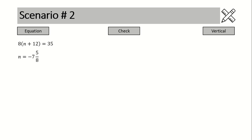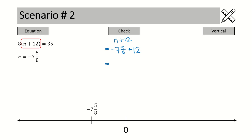Now let's look at scenario number two. Inside our brackets we have n plus 12, but when we substitute our solution it's a negative mixed number — in this case, negative seven and five-eighths — and we are going to add 12. On the number line, we start at negative seven and five-eighths and add 12, crossing over zero into the positive domain. Because it's hard to work with a negative mixed number adding into the positive domain, we switch the terms around — putting the positive 12 term out front, then negative seven and five-eighths next.